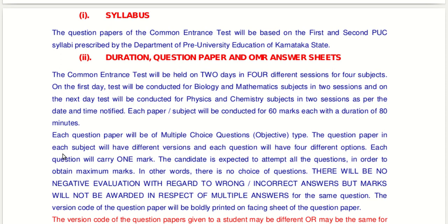The question paper in each subject will have different versions. Last time there were 16 versions — each room has 16 students and 16 versions of question papers, such as A1, A2, A3, A4, B1, B2, B3, B4 through D1, D2, D3, D4. Each question will carry one mark.